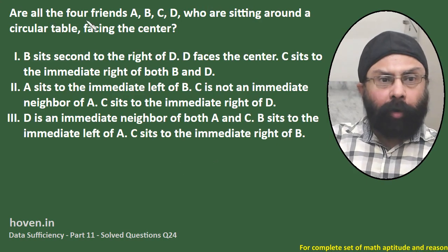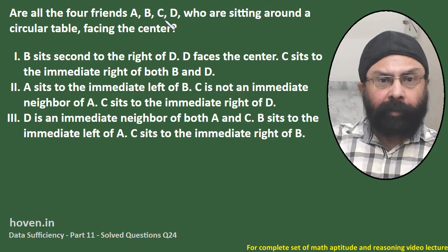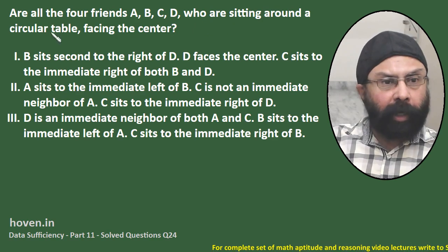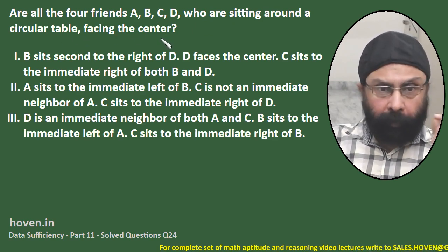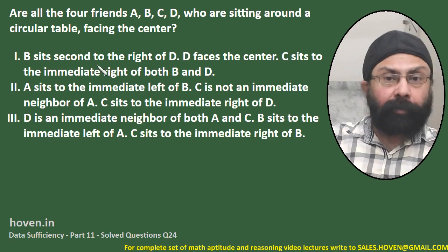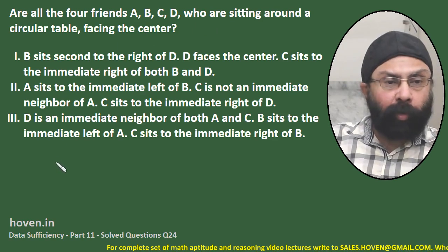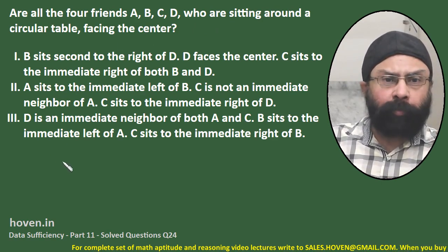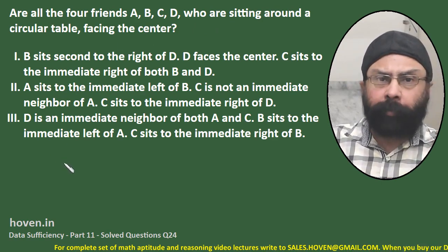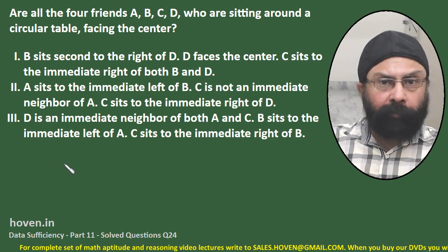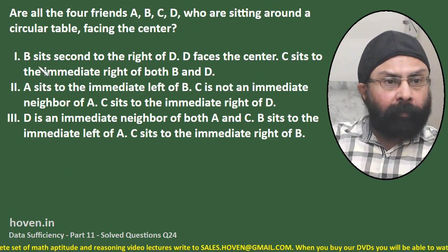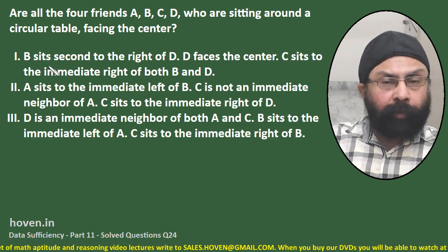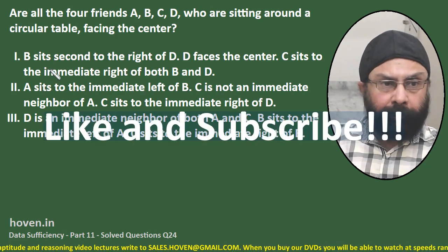Are all four friends A, B, C, D, who are sitting around a circular table, facing the center? We have four friends sitting around a circular table — a small table with only four people, so things won't get very complicated. This was asked in one of the previous year papers.